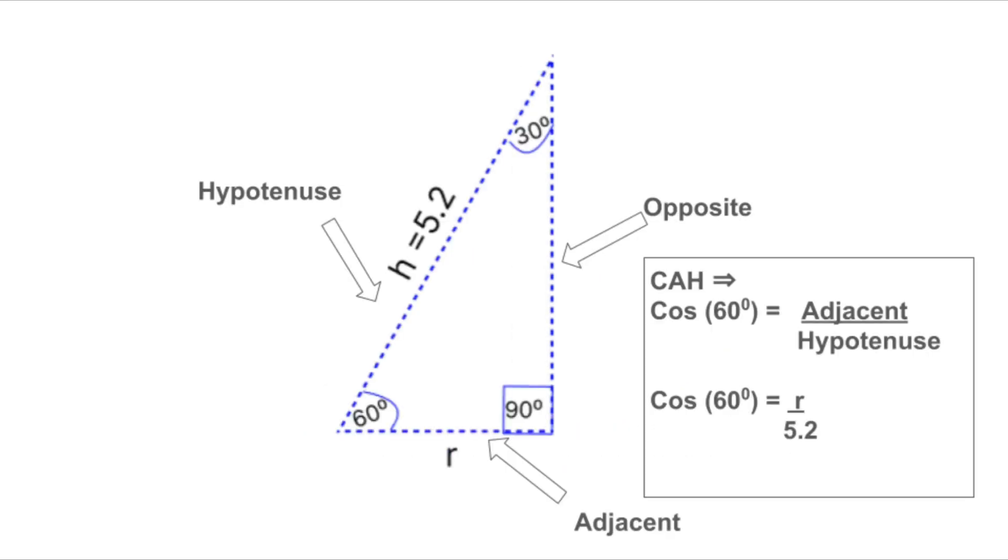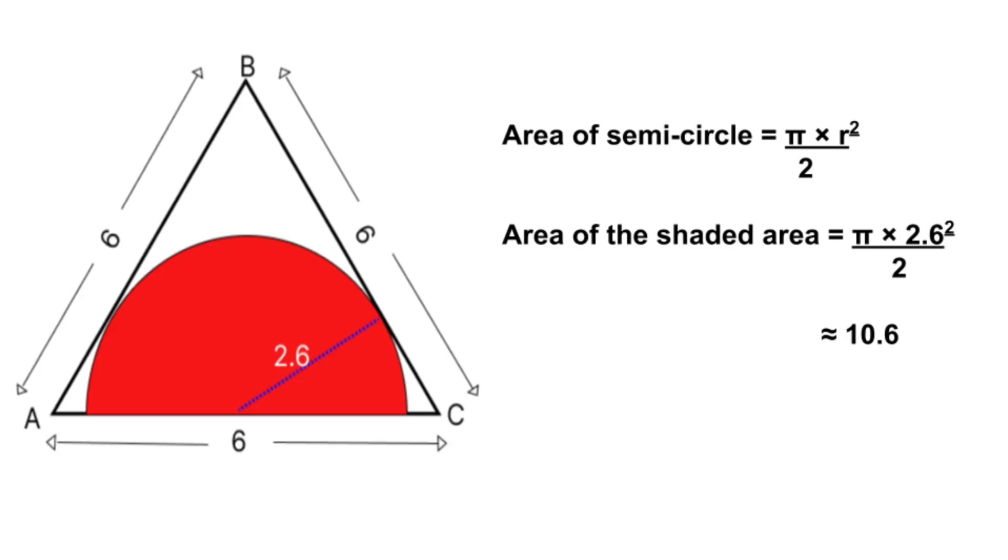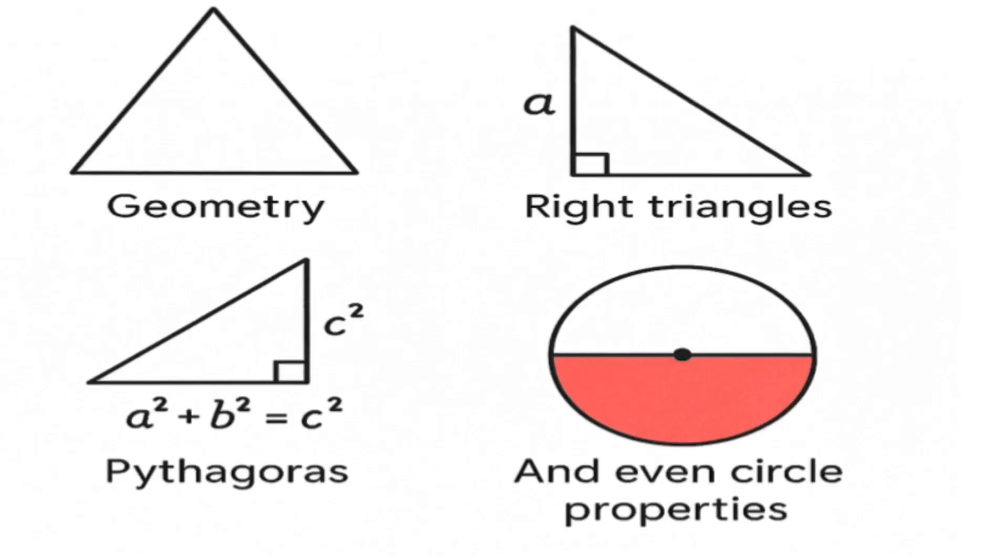Then, we turned to trigonometry, using cosine, and giving a respectful nod to sine to actually calculate the value of R. And finally, we used that radius in the semicircle formula to find the area of the shaded region. Along the way, we used geometry, right triangles, Pythagoras, trig ratios, and even circle properties. All these different ideas working together to solve one neat problem.